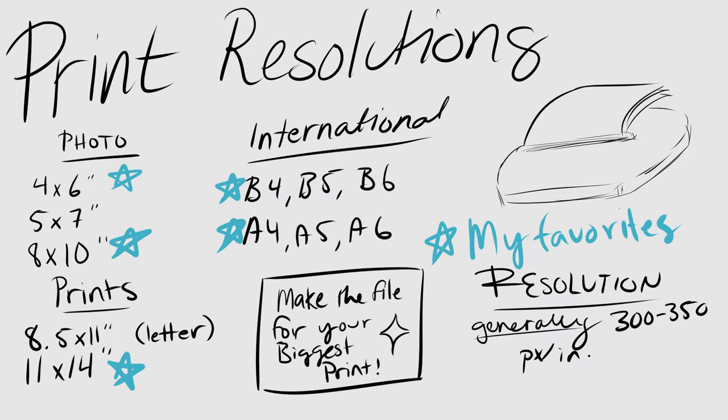When you come to print resolution, generally you want 300 to 350 pixels per inch, and most programs will allow you to pick your size in inches or centimeters rather than just having to count the pixels. One thing to keep in mind is making the file fit the biggest print you want to make of it. So if you're going for a poster print, you want to make it as big as your biggest poster, because it's way easier and better to size down than to size up.